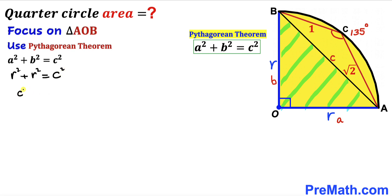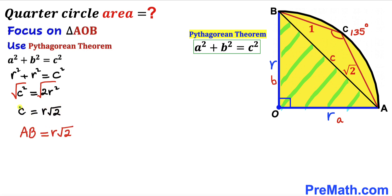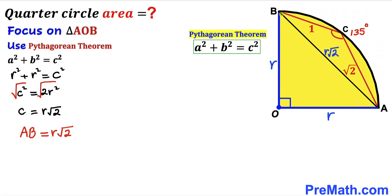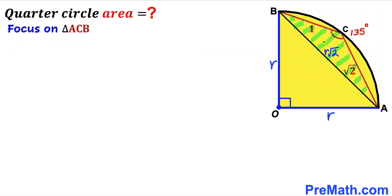Combining like terms: r² + r² = 2r², so c² = 2r². Taking the square root of both sides, c = r√2. Since c represents side AB, we get AB = r√2.